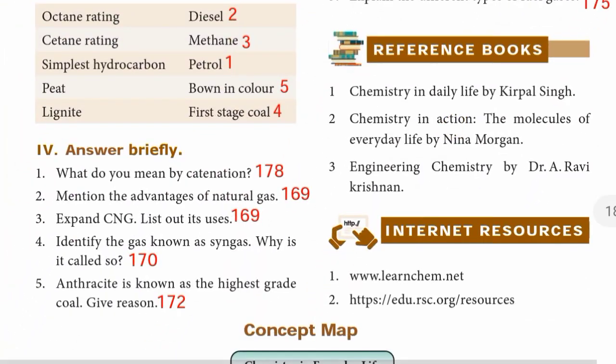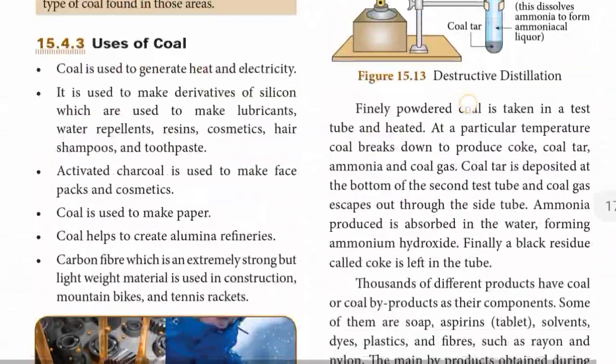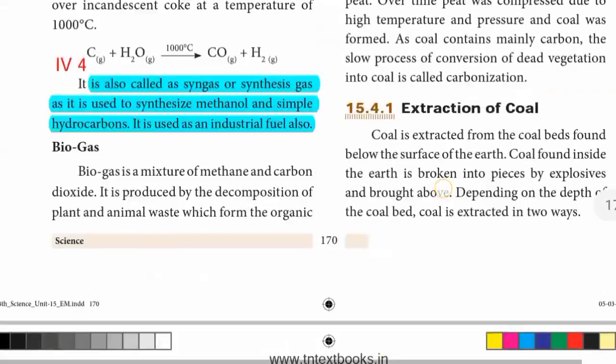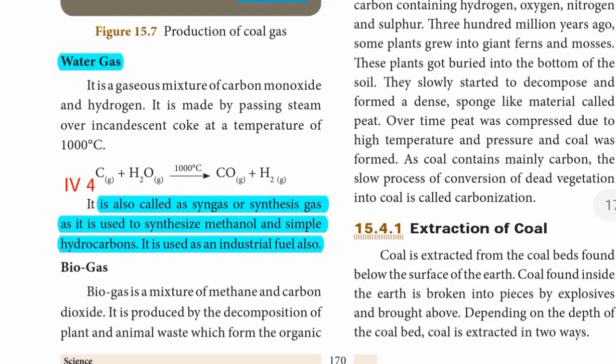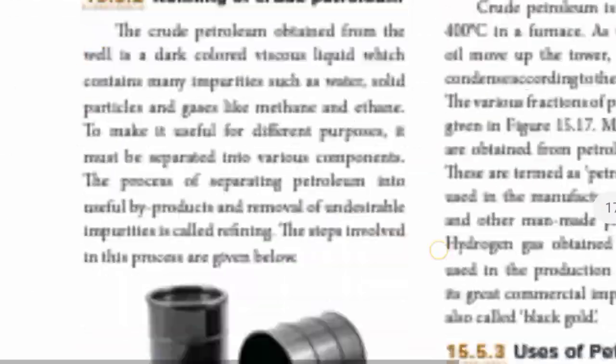Fourth question: Identify the gas known as syngas — why is it called so? Page 170. Water gas is also called syngas or synthesis gas, as it is used to synthesize methanol and simple hydrocarbons. It is also used as an industrial fuel.